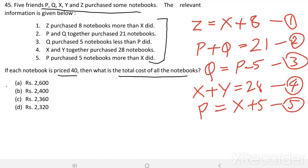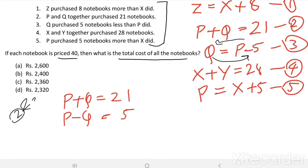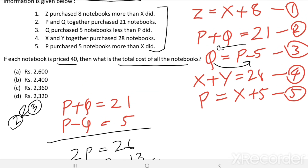From equations two and three, we can write P + Q = 21 and P − Q = 5. Adding these two equations, we get 2P = 26, so P = 13. When P = 13, from equation five, X = 13 − 5 = 8.